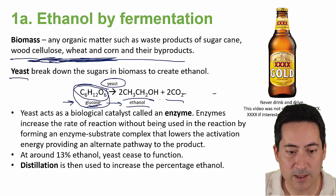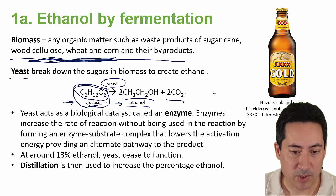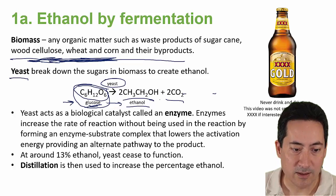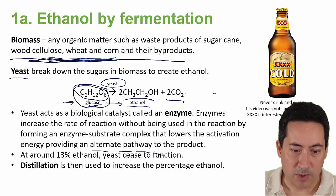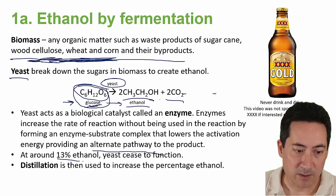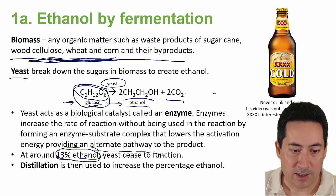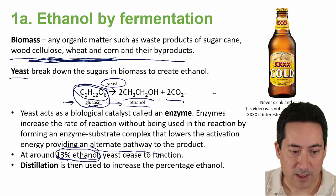Enzymes are biological catalysts that increase the rate of reaction without being used up. They form an enzyme-substrate complex that lowers the activation energy, providing an easier alternate pathway. Interestingly, yeast produce ethanol but kill themselves once it reaches about 13%, because they just keep on producing. To get drinks above 13% — spirits and so forth — we use distillation.